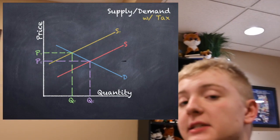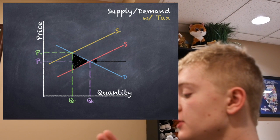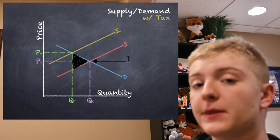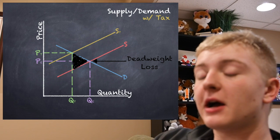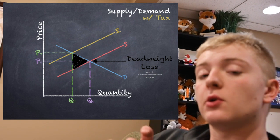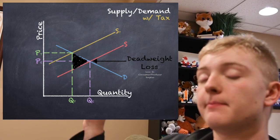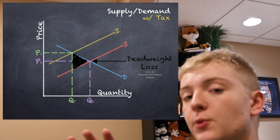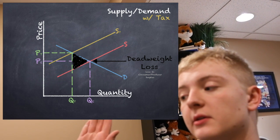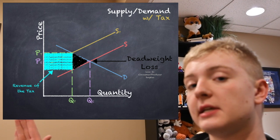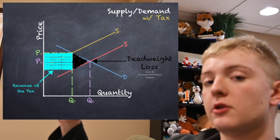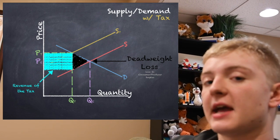It's also important to note that when you tax, there's a loss of efficiency, otherwise known as a deadweight loss. You're also going to want to note how to calculate the total revenue of a tax — it's that little box right there, the area of the box between where the tax quantity is and the line, multiplied by the total value of the tax.